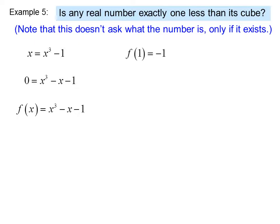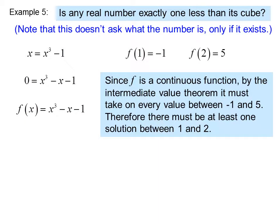If we let x equals 1, f of 1 equals negative 1, and x equals 2, f of 2 equals 5. So because f of x is a continuous function, we know that as x moves from 1 to 2, y must move from negative 1 to 5 without a break. Since f is a continuous function, by the intermediate value theorem, it must take on every value between negative 1 and 5. Therefore, there must be at least one solution between 1 and 2.